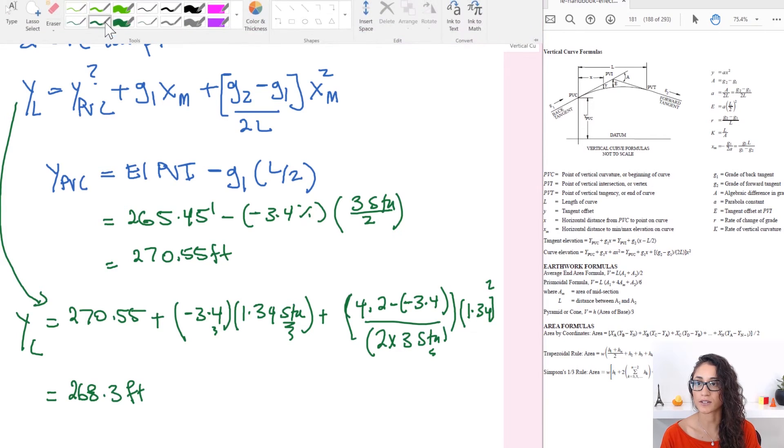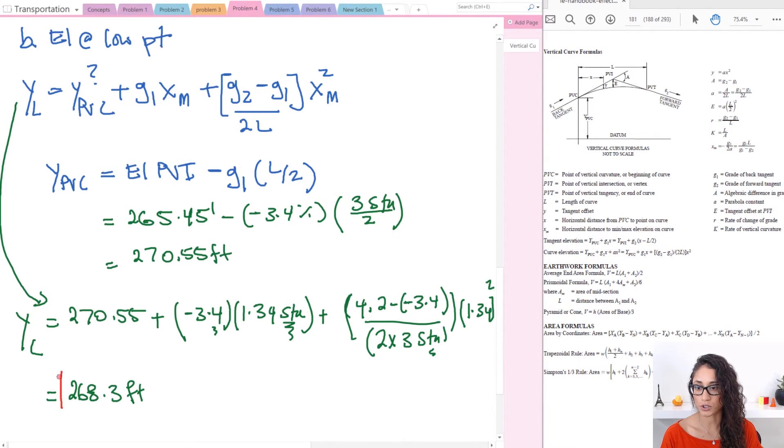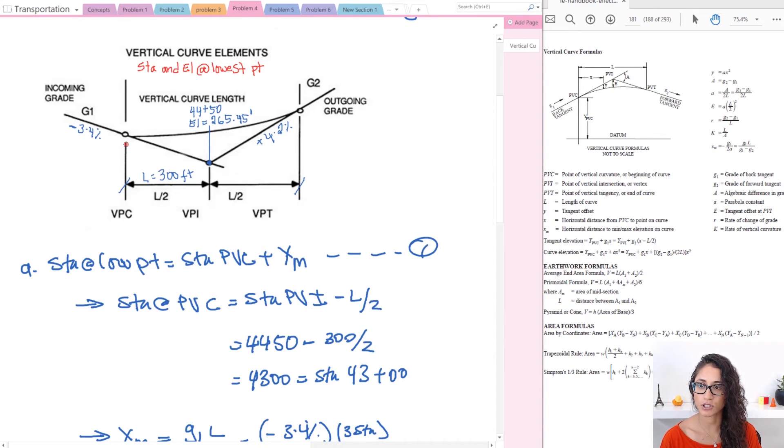So that is your elevation at the lowest point. Note if you look at the station that we calculated for PVC it was equal to 43. Now at PVI is 44 plus 50 and the lowest point elevation was 44.34, so it's somewhere around here. So that is the station at the lowest point which is 44.34. As I mentioned earlier it's never really at PVI. It's always somewhere close to it or near it.